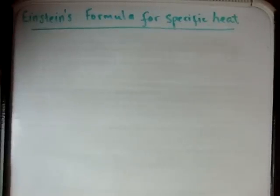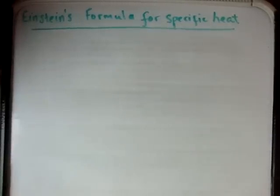In this video, I'd like to prove Einstein's formula for the specific heat capacity of a solid. Before I do that, I'd like to show you what was known at the time when Einstein was deriving this.